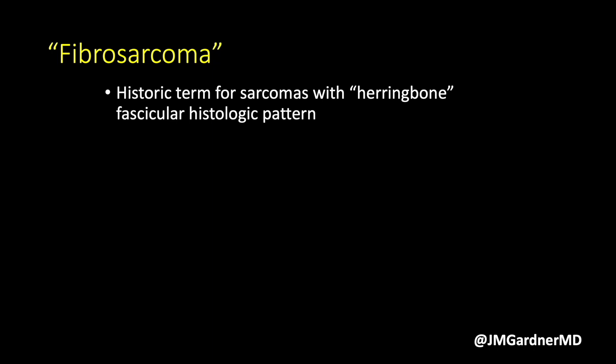Let's talk briefly about fibrosarcoma. This is a historic term for sarcomas that had a herringbone fascicular pattern of spindle cells. Looking back at the early 1900s, fibrosarcoma was the most common type of sarcoma in soft tissue pathology, but now it is vanishingly rare. Most things that were called fibrosarcoma in the past, when worked up with modern immunohistochemistry and molecular techniques, end up being something else — DDLPS, synovial sarcoma monophasic type, cellular schwannoma, cellular fibrous histiocytoma, and so on.